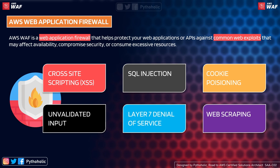The fourth one is unvalidated inputs, which is very important. Every application has a form or text input, and if they are not validated properly — if the data entered isn't ensured to be reasonable — it could lead to severe attacks. The fifth one is Layer 7 denial of service, where an attacker overwhelms the server with a huge amount of traffic at once over a period of time, making the service unusable.